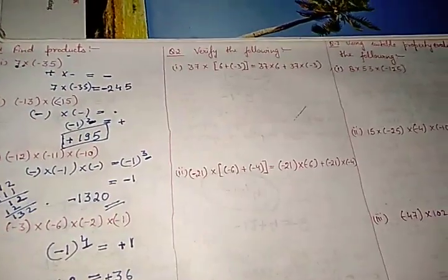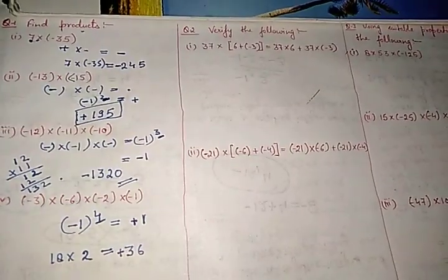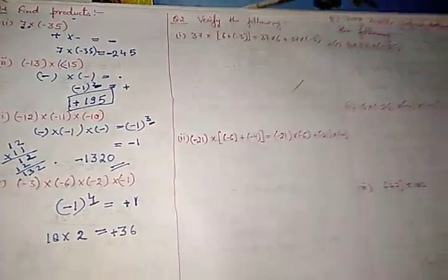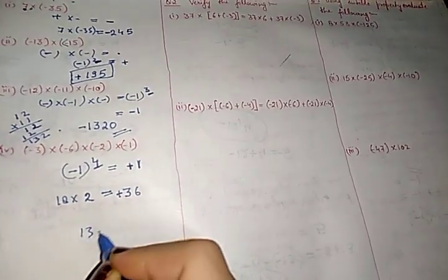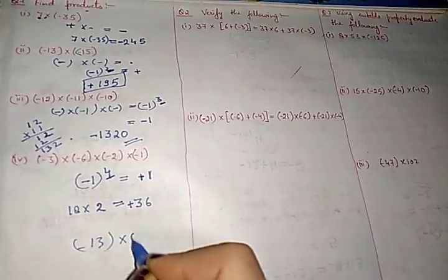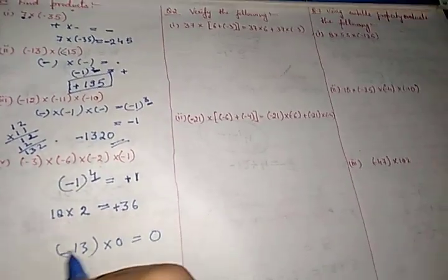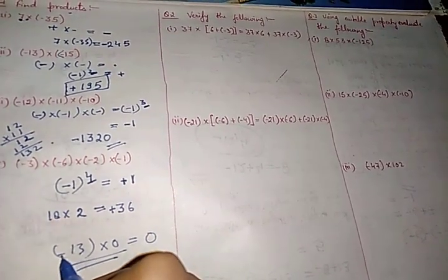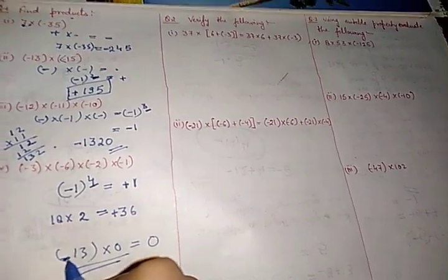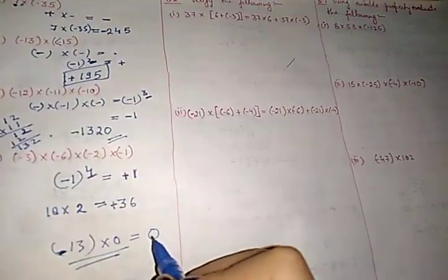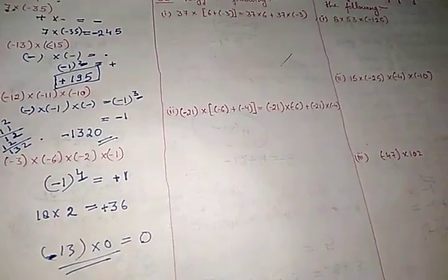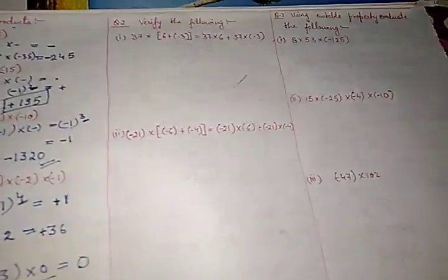What about multiplying with 0? If integers are multiplied with 0 — for example, minus 13 times 0 — it will come out 0 only. No need for a negative or positive sign, because 0 is neither a negative number nor a positive number.